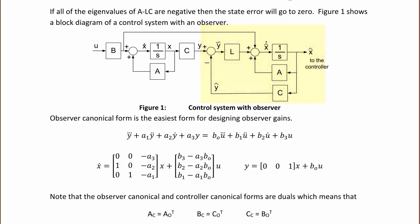The observer canonical form is the easiest form for designing observer gains. It is: y-triple-dot plus a1*y-double-dot plus a2*y-dot plus a3*y equals b0*u-triple-dot plus b1*u-double-dot plus b2*u-dot plus b3*u, written in matrix form as shown. Note that the observer canonical form and controller canonical forms are duals: the controller A is the transpose of the observer A, controller B is the transpose of observer C, and controller C is the transpose of observer B.